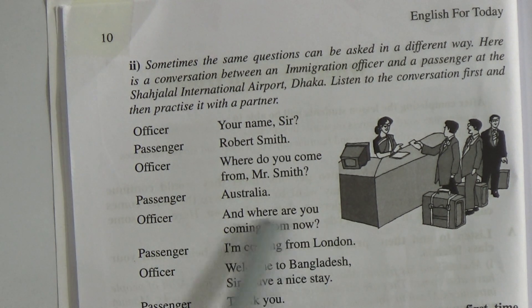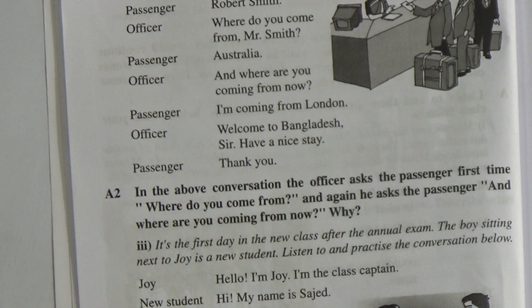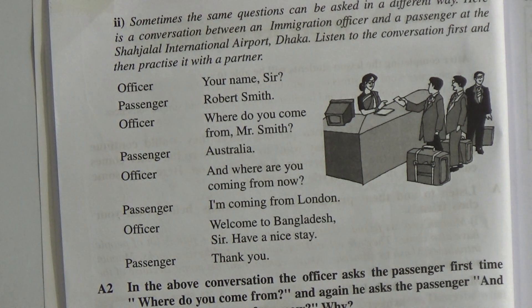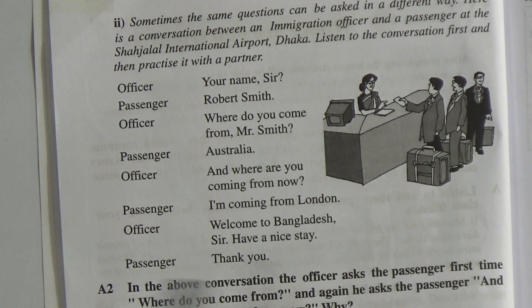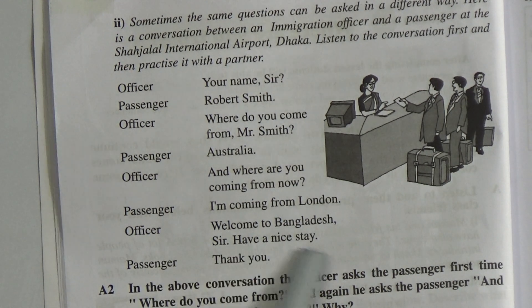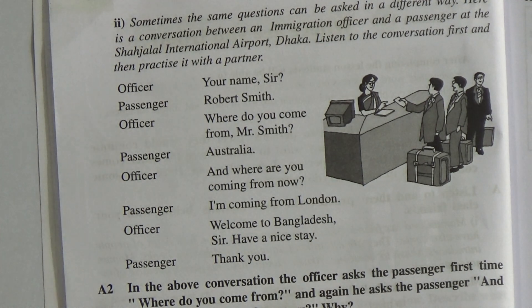Then the officer asked: And where are you coming from now? The passenger said that he is coming from London. That means the passenger was coming from London. Officer: Welcome to Bangladesh. The officer welcomed him to Bangladesh. Sir, have a nice stay. The officer also wished the passenger a nice stay in Bangladesh. Thank you. This is the conversation between an officer and a passenger at Shahjalal International Airport.